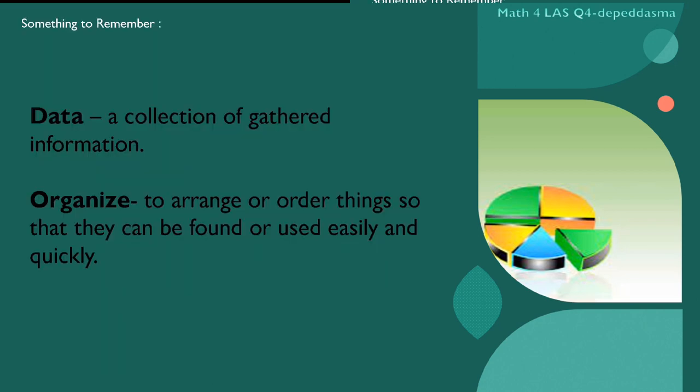Something to remember. Data. When we say data, it is a collection of gathered information. Organized. This is to arrange or order things so that they can be found or used easily and quickly.